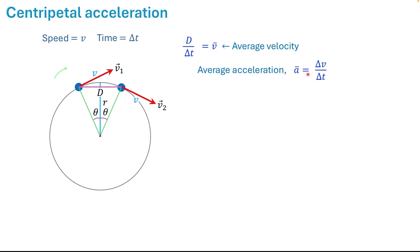Average acceleration, a bar, is equal to delta v over delta t. We are interested in the magnitude of acceleration. So I take the magnitude of the change in velocity. To find delta v, we will use x and y components of the vectors v1 and v2. I am taking the x-axis along the displacement. The y-axis is perpendicular to the x-axis.